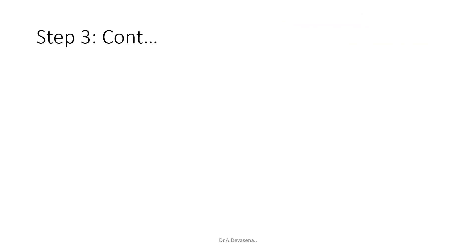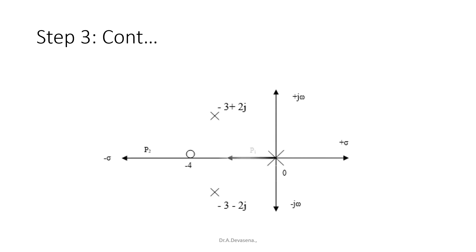Now we are going to locate the poles and zeros. We have one real pole at s = 0 and two complex poles at s = -3 + 2j and s = -3 - 2j. The poles are represented as a cross symbol in the s-plane. We have one zero at s = -4, represented as a circle in the s-plane.